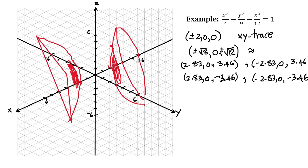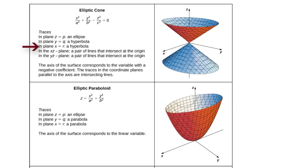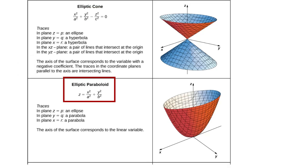Next we have the elliptic cone. The equation almost looks like the hyperboloid of two sheets but it equals zero, not one. There's a negative in it. The traces are ellipses as you go up and down the z-axis. Looking parallel to the y-plane gives a hyperbola; parallel to the x-axis also gives a hyperbola. In the xz plane there's a pair of lines intersecting at the origin, and in the yz plane the same. The axis corresponds to the variable with the negative coefficient, opening up and down the z-axis.